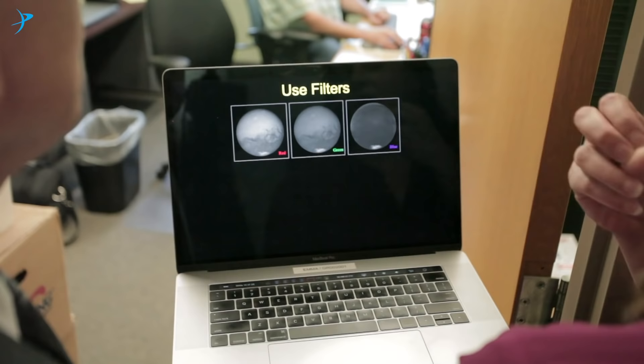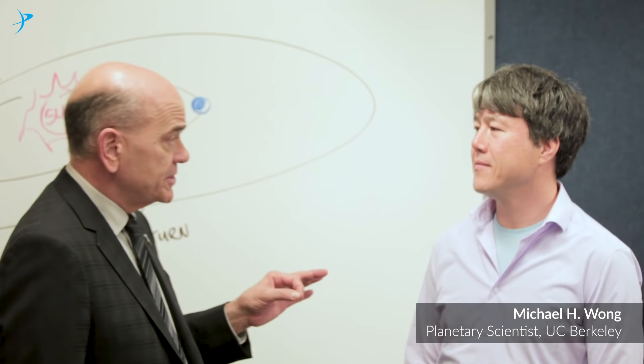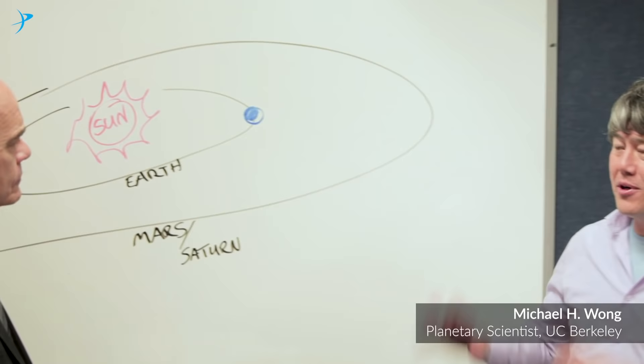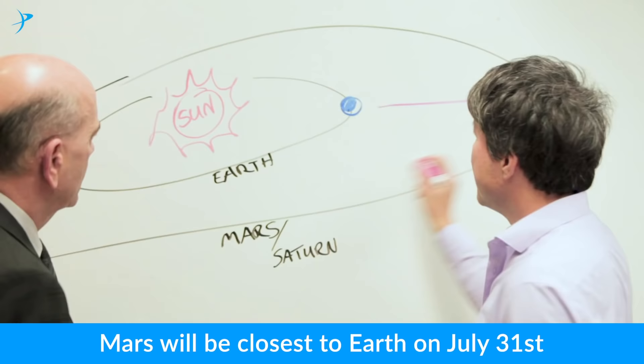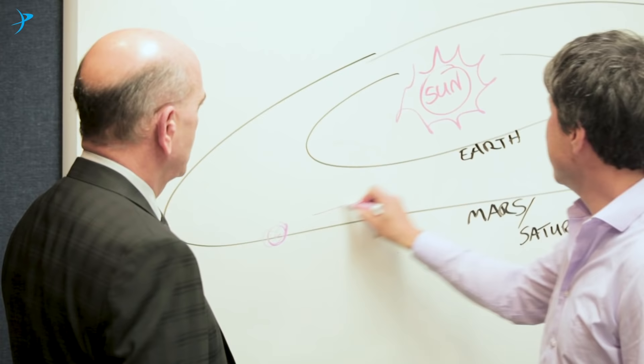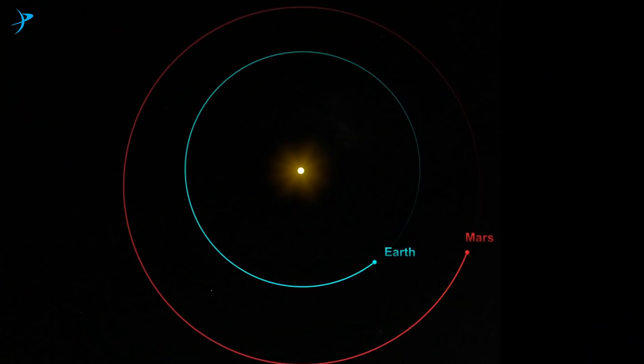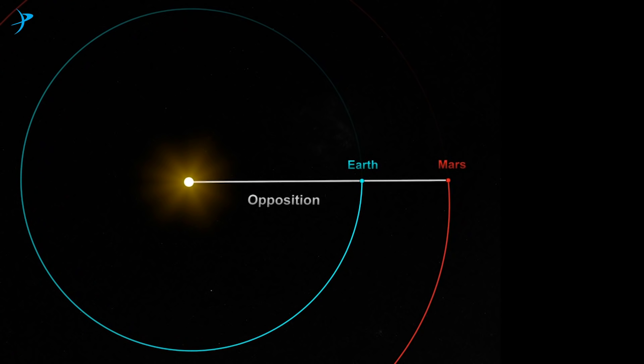In July, Mars will be in opposition. We want to observe these planets when we can see the most detail possible, and that's when they're closest to us. So if a planet is at this point in its orbit that distance is small, but if it's way over here then that's a larger distance so the planet will be farther away. We get the best detail when we observe at opposition.